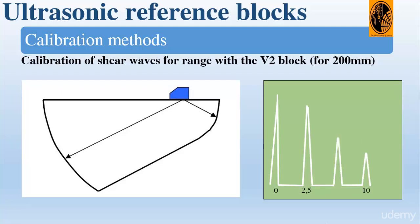Now let's see the calibration of shear wave for 200 mm on the V2 block. We point the probe at the 50 mm arc and obtain three echoes on the screen, representing 50, 125, and 200 mm. We maximize the signals by sliding the probe forward and backward, then adjust the range and delay until the first signal comes one quarter of the way across the screen at 2.5 and the third echo comes at the extreme edge of the screen at position 10.